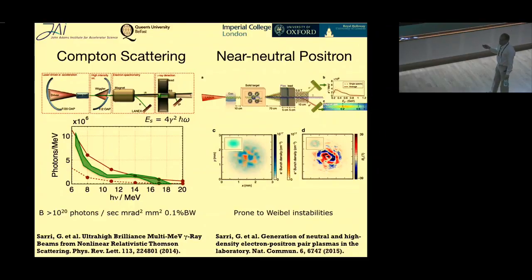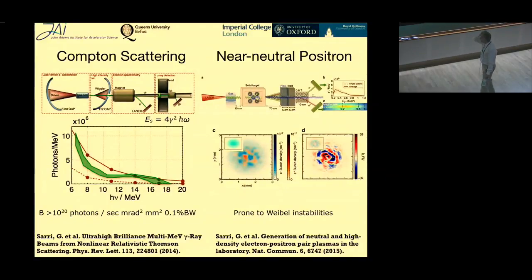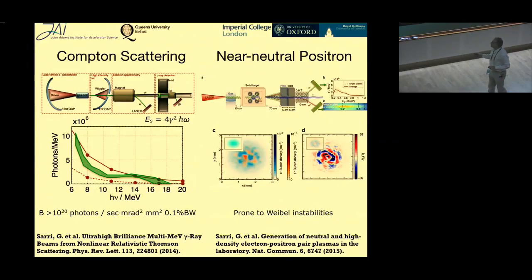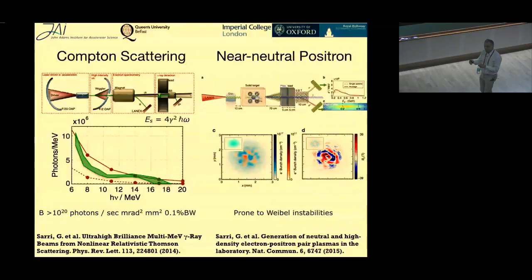We can also generate positron beams directly by hitting a lead block. Our collaborators at Queen's University Belfast are looking at instabilities: the electron turns into a shower, the positrons also turn into a shower, and at some point you end up with almost equal numbers of electrons and positrons. They have quite different behavior — for example, the Weibel instability grows much more strongly with positrons than with ions, because positrons are mobile as well.